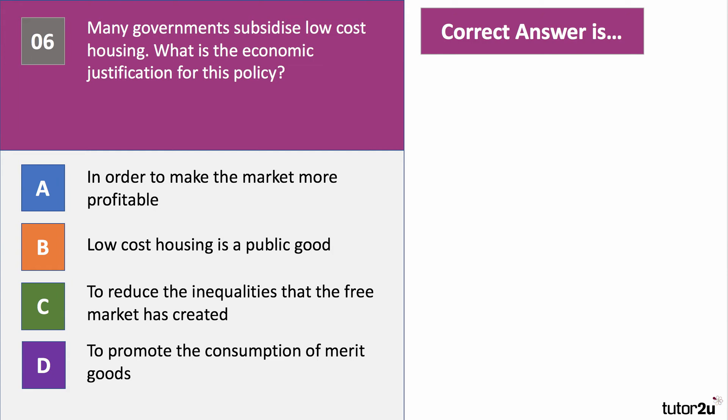The right answer to question six is C: to reduce inequalities that the free market has created. This is the idea that inequality in housing is part of inequality of wealth and access to basic needs, and therefore a subsidy — for example for social housing provided by local authorities or housing associations — is justified on grounds of affordability and equity.